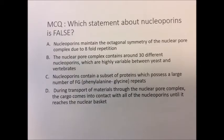The answer to the multiple choice question was B. The statement read, the nuclear pore complex contains around 30 different nucleoporins which are highly variable between yeast and vertebrates. This is incorrect as the nucleoporins are actually highly conserved.